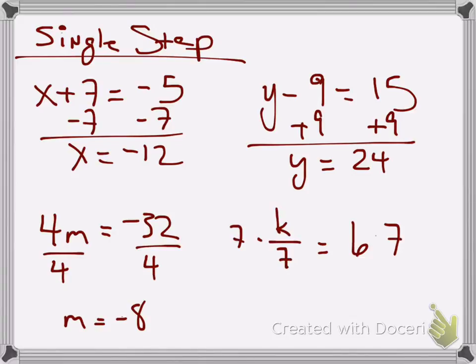For multiplying, we need to divide to get negative 8. And when we're dividing, we need to multiply to get 42. So y'all should know that.